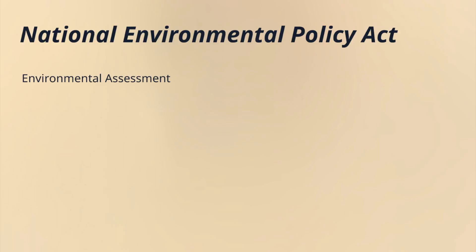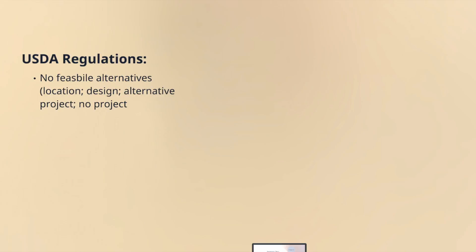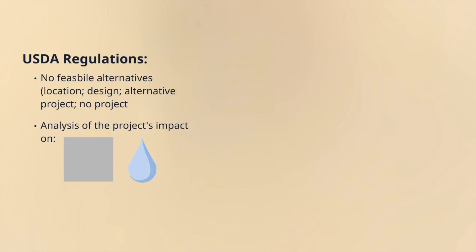Agencies are given the authority to do something called an environmental assessment to determine whether they need either an environmental impact statement or a finding of no significant impact statement. There are regulations related to both the Council on Environmental Quality and FSA's own NEPA regulations. The USDA regulations require that they analyze in their environmental assessment whether or not there are feasible alternatives — different location, design, project, or no project — and whether there is an analysis of the project's impact on air quality, water quality, or the natural environment including wildlife.